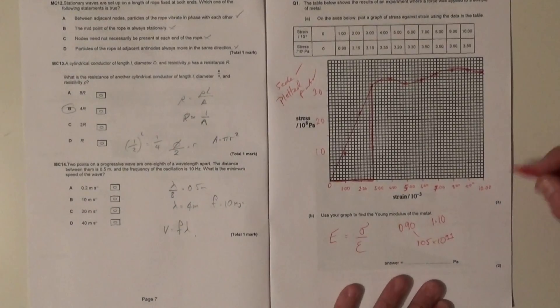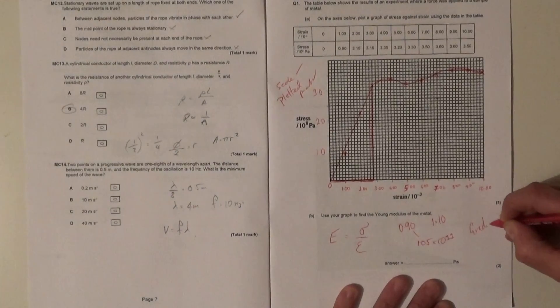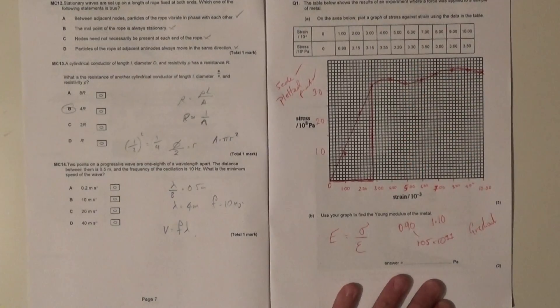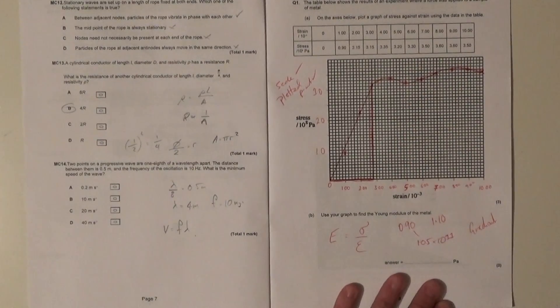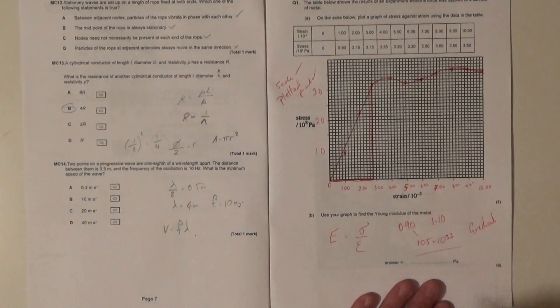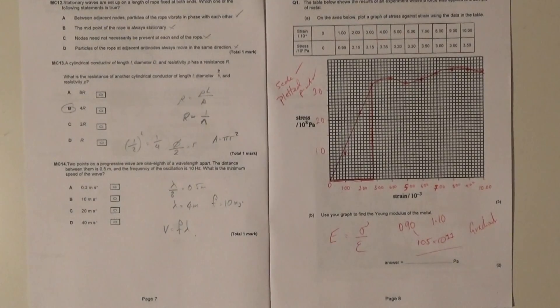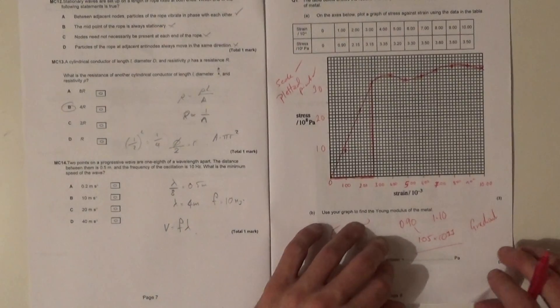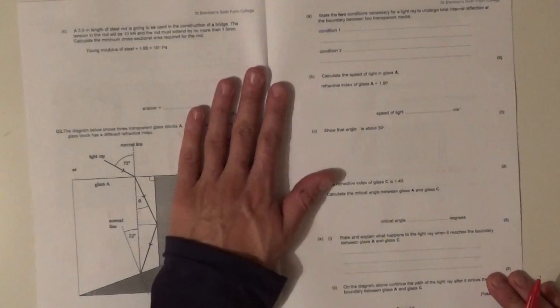So first mark is for actually showing understanding that you're using the gradient, so it's basically a gradient mark, making a triangle, doing something like that. And the second one of course is for getting a correct value in the range that I've just stated there. So those are your first five marks, money for jam.